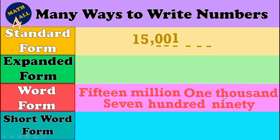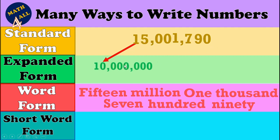I replace the word 'thousand' with a comma. Then the next part is seven hundred ninety — write seven hundred and ninety. Now, can you write this number in expanded form? It's easy — just write the value of each digit. The first digit is one in the ten-millions place, so write one and drop seven zeros: ten million.